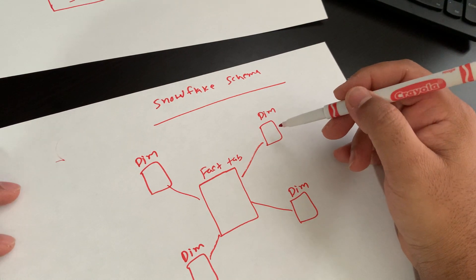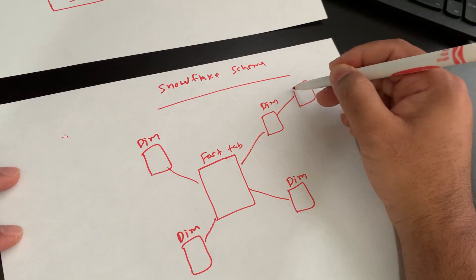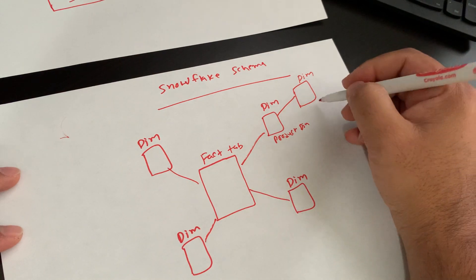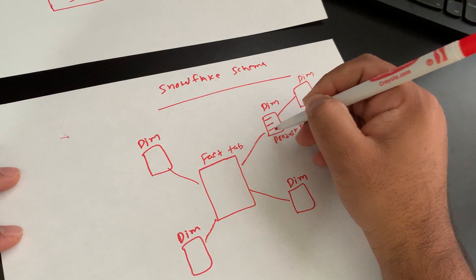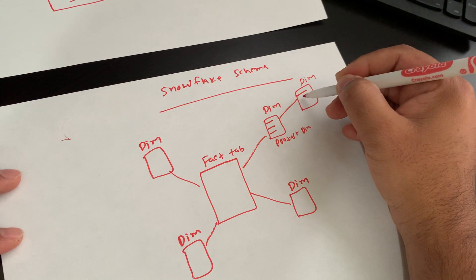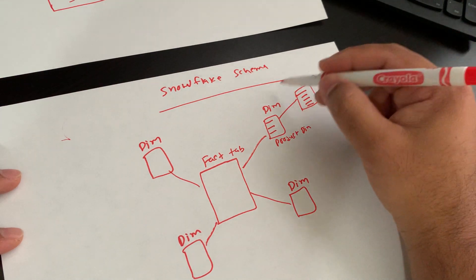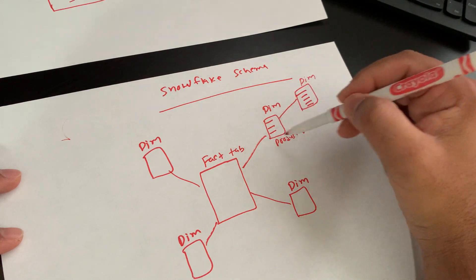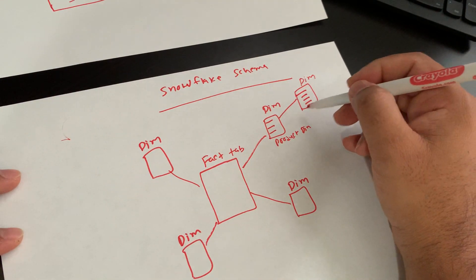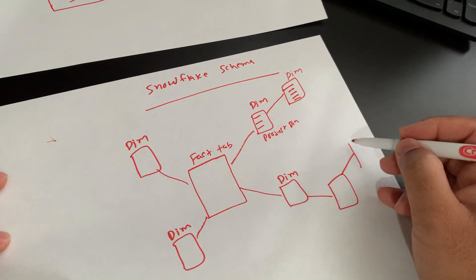For example, if we have a product dimension table with product name, parts, and serial number, they can split that product table into two: one with serial number and another with manufacturer name, manufacturing date, and region. So they split one product dimension table into two dimension tables, but both are still correlated back to the fact table. The same can be done for any dimension table.